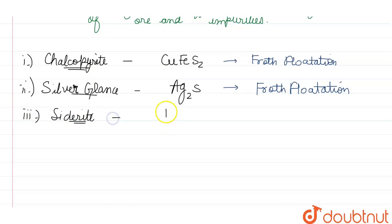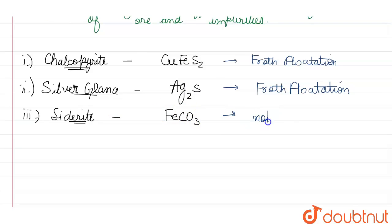The third one is siderite. Siderite has the chemical formula FeCO₃, which is ferrous carbonate. So it is a carbonate ore and therefore it will not undergo froth flotation.